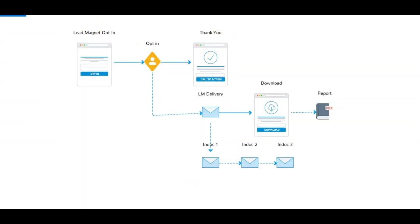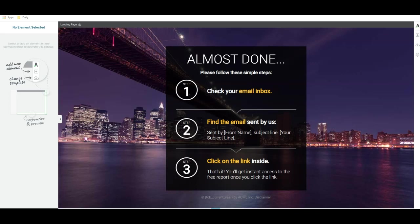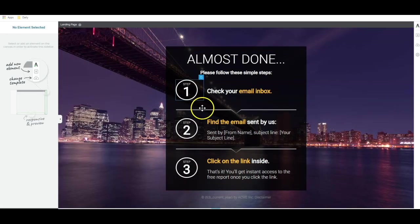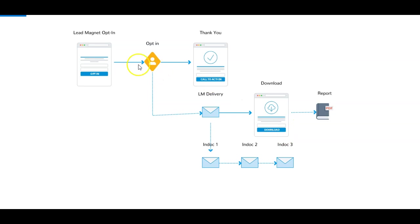The download link for your lead magnet — whatever it is — can be uploaded to Google Drive, Dropbox, OneDrive, wherever. There are so many places you can store it. Now you see how all these products out there are selling shiny objects — oh, you need our automatic lead magnet building system — when you don't actually need that. I've just created three pages in less than 10 minutes. Obviously you have to go in and tweak each one, design it, and create the lead magnet in the first place, but the structure is straightforward.